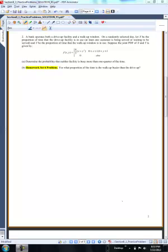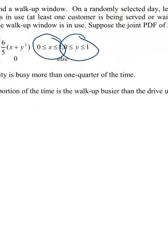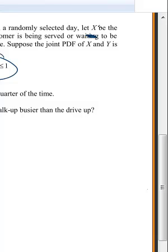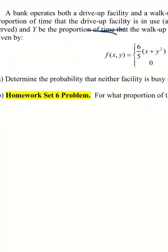Here is problem 2 from the practice problems. This is another continuous one. When you see things written as intervals, you know it's continuous. Here's a bank — there are two facilities, a drive-up and a walk-up window.